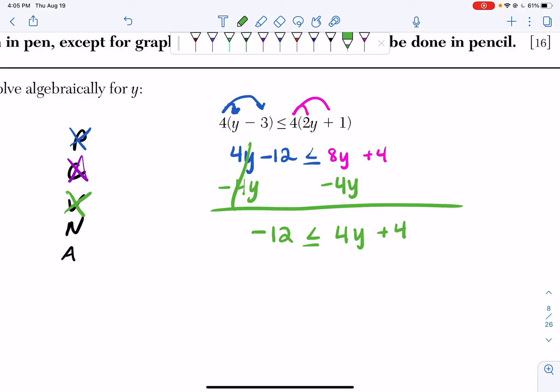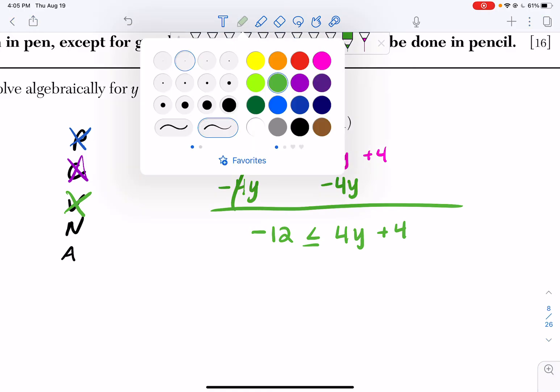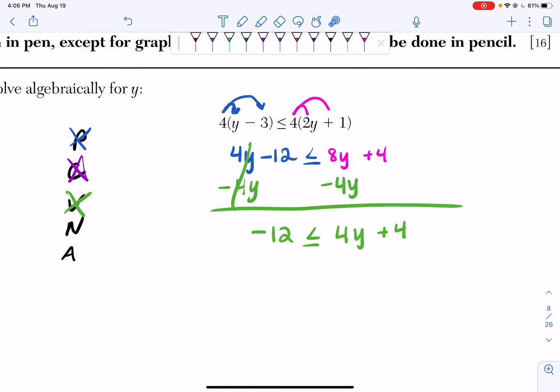Now all my variables are on one side of my inequality. Now I have to ask myself, are all my numbers on one side of my inequality? And if I look, they aren't, because I have a positive 4 over here. I want to bring this positive 4 to the left-hand side of my inequality.